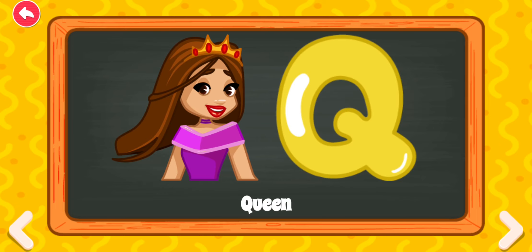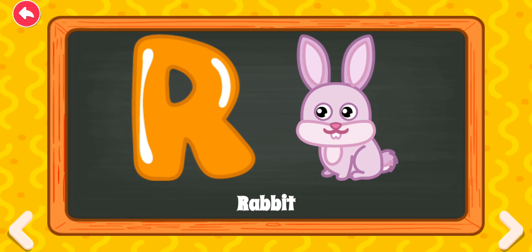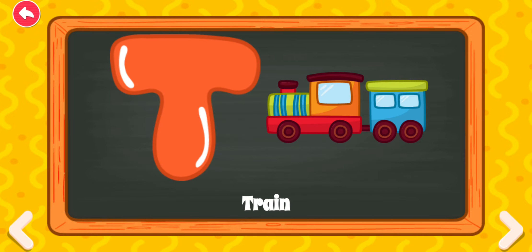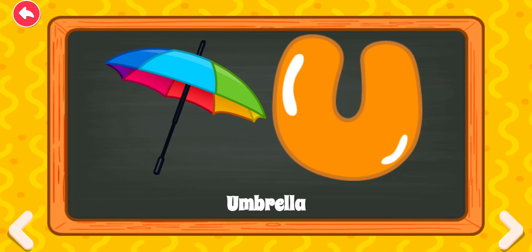P for pig. Q for queen. R for rabbit. S for sun. T for train. U for umbrella.